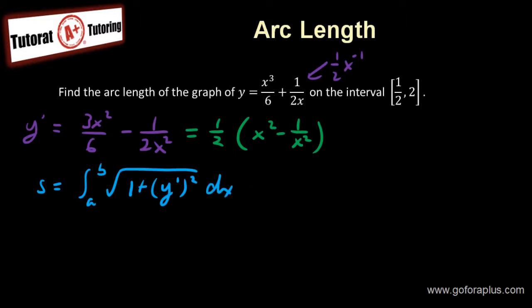So if I plug in all the information now, I have 1 half to 2 square root of 1 plus 1 half times 1 half times x squared minus 1 over x squared. This whole thing square dx.